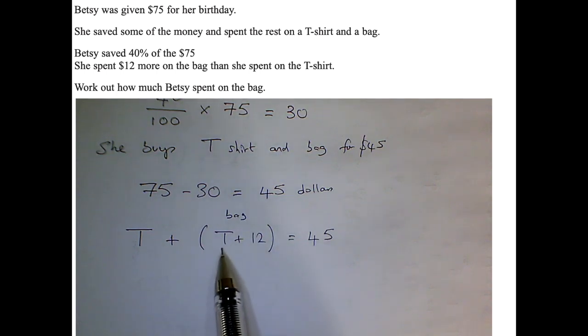Now I can see that T plus 12, which is the bag, plus the number T, that's going to be two T's plus 12 equals $45.